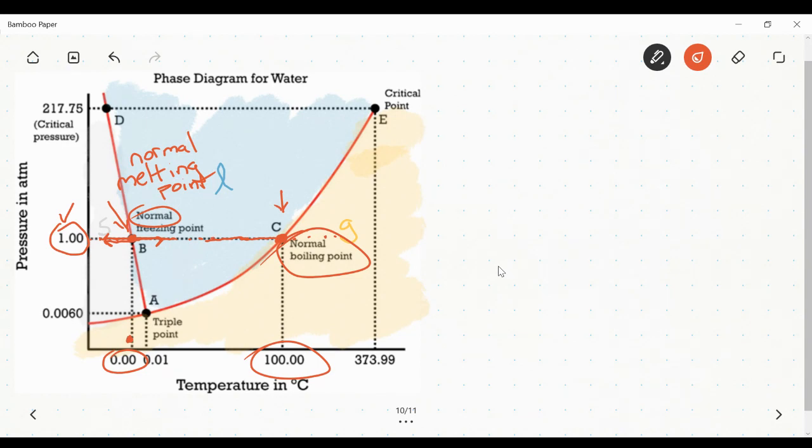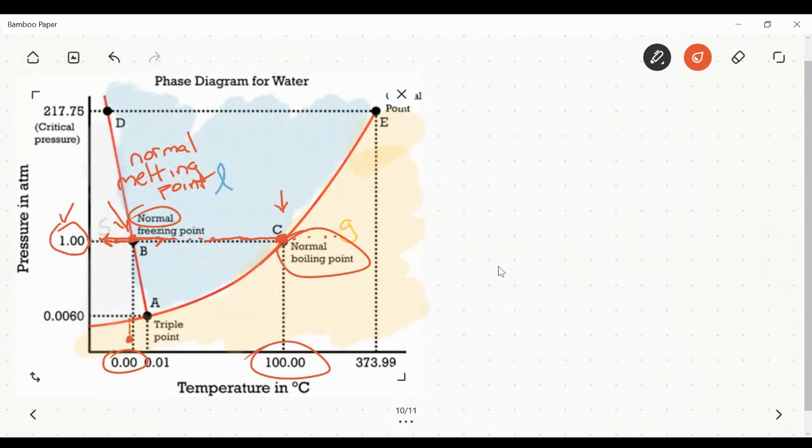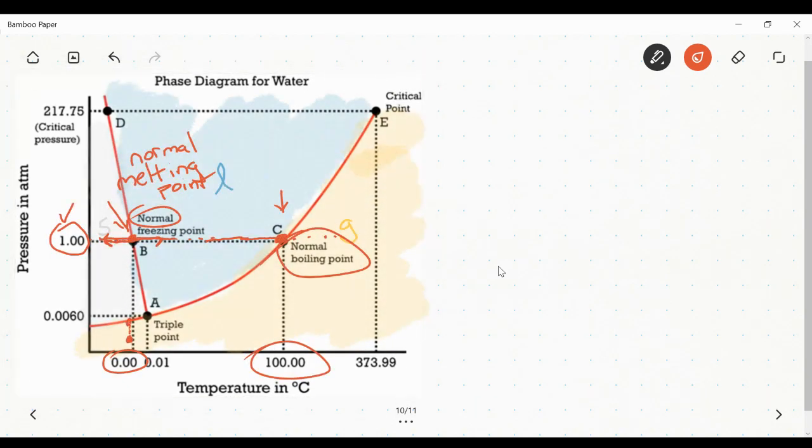But what if I started to squeeze those particles closer together? In other words, to increase the pressure. Well, as I squeeze them together, I start to move up on this diagram. I eventually hit this point right here. And that point, I would be transitioning from the gas phase into the solid phase. That's a type of condensation.